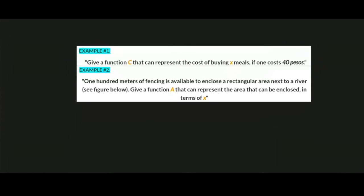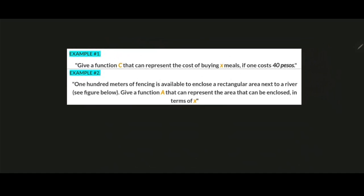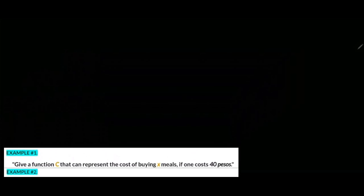Hi, good day everyone. This video is about functions that represent real-life situations. We have two examples: Example 1 — give a function C that can represent the cost of buying X meals if one meal costs 40 pesos. Example 2 — 100 meters of fencing is available to enclose a rectangular area next to a river; give a function A that can represent the area that can be enclosed in terms of X. Let's answer item number one.